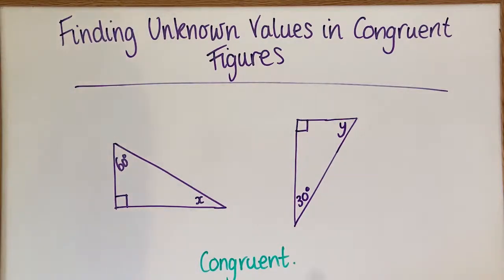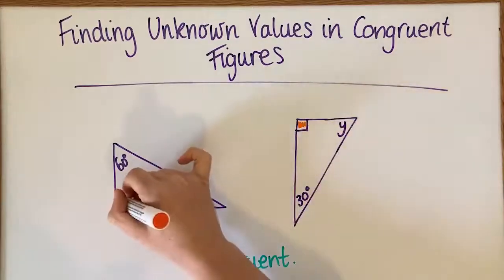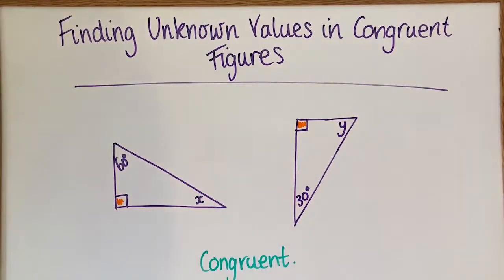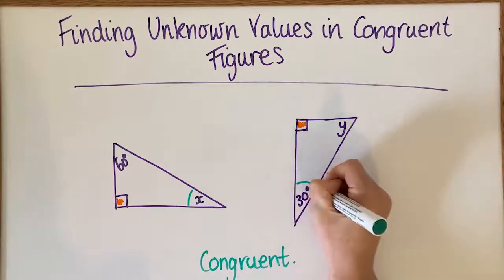And we can use that knowledge to determine which angles go together. OK, so I can see that these are right angles. So the right angles are going to be a pair. I can see there's a small angle here. So I'm going to say that this angle pairs with this angle.